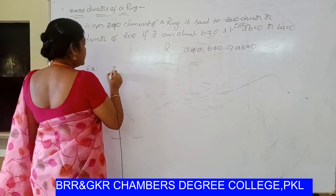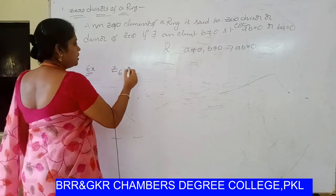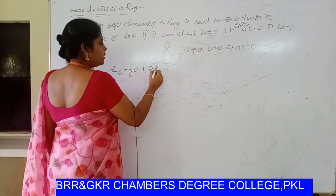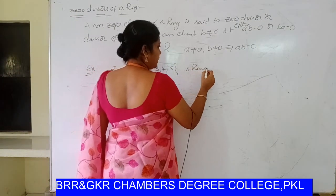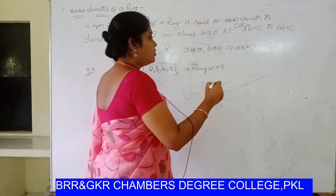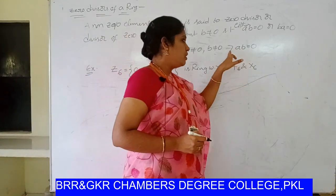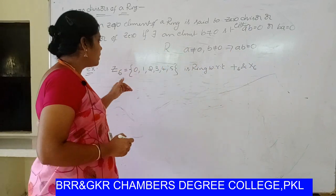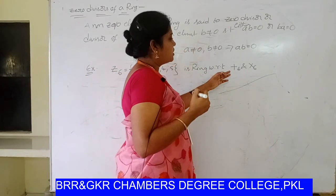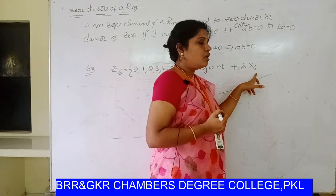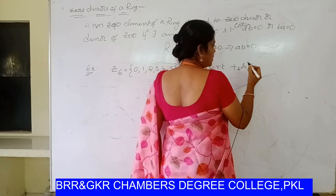From group theory you have the group Z6, which is the set of integers with addition modulo 6. The elements are 0, 1, 2, 3, 4, 5. This set is a ring with respect to the operations addition modulo 6 and multiplication modulo 6. I will explain about these two operations.